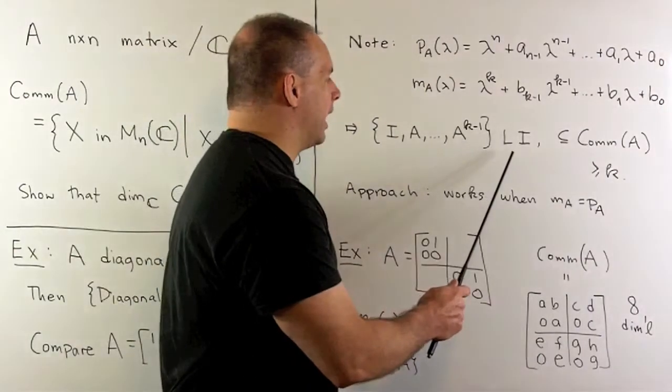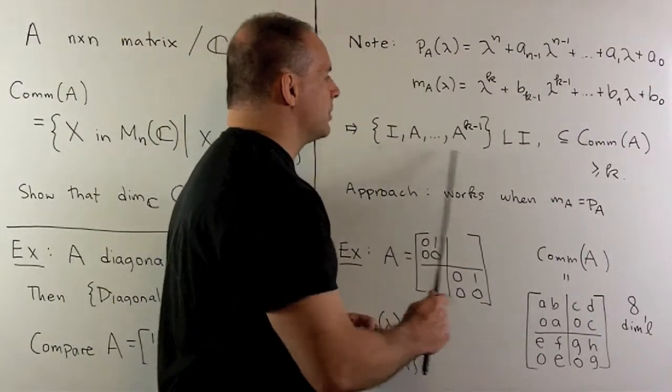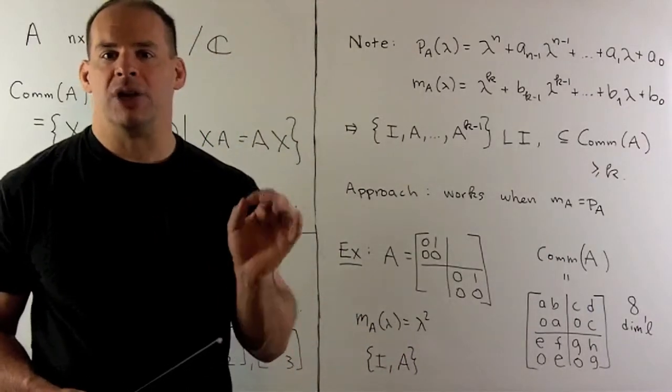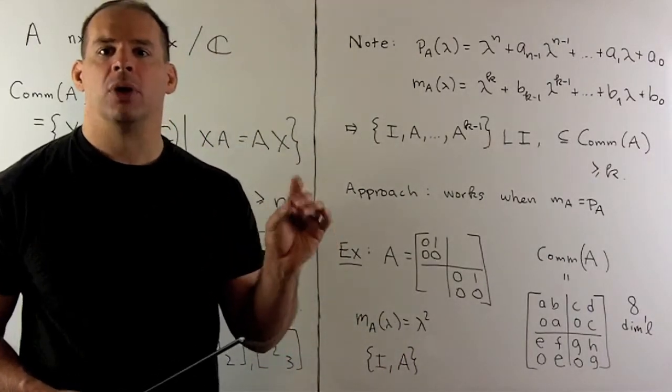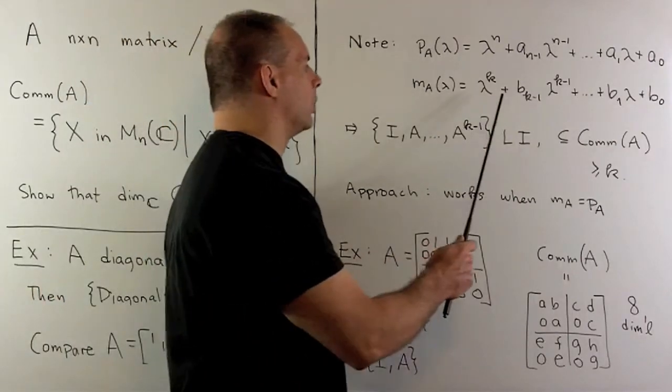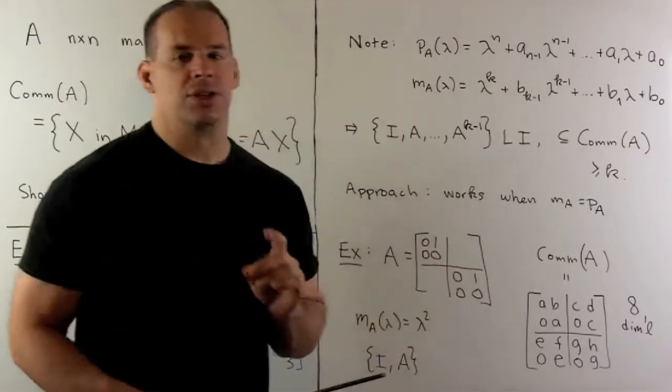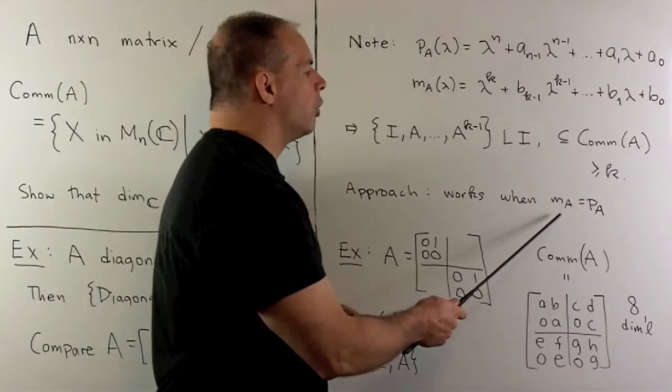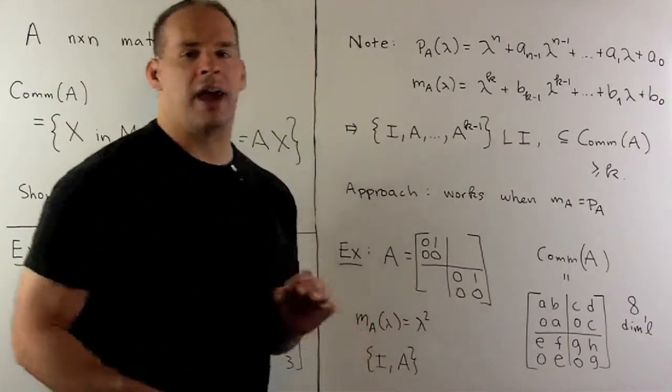This set will be linearly independent. It'll be a subset of the commutant of A. So we see that the dimension of the commutant is greater than or equal to K, where K is the degree of the minimal polynomial. So this approach is only going to work if our minimal polynomial is equal to our characteristic polynomial.